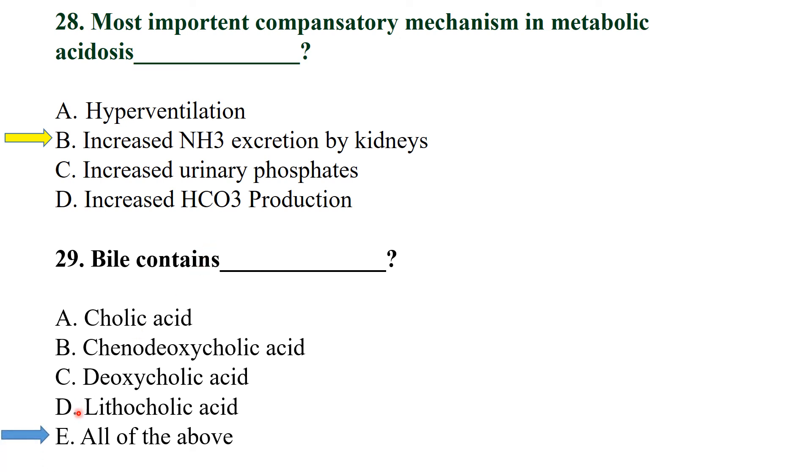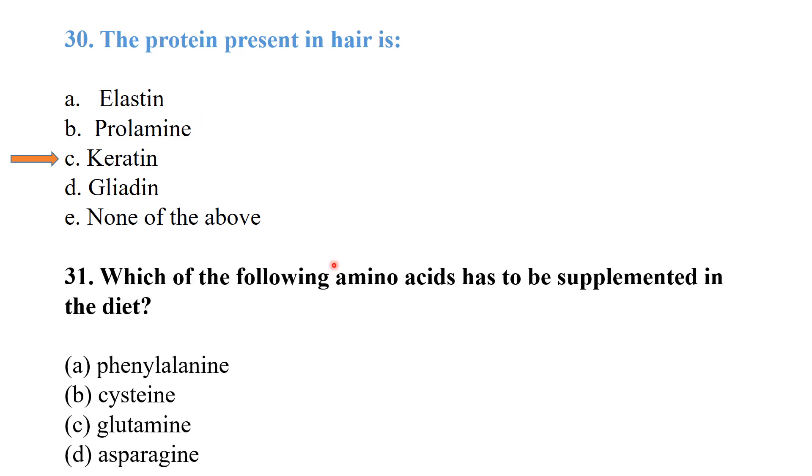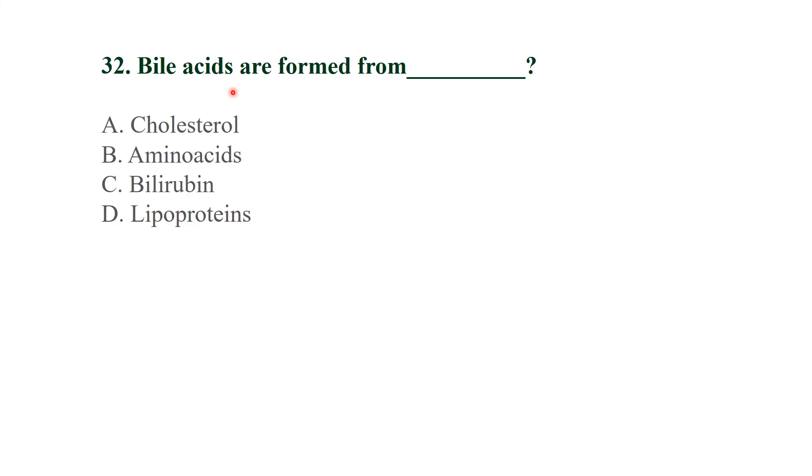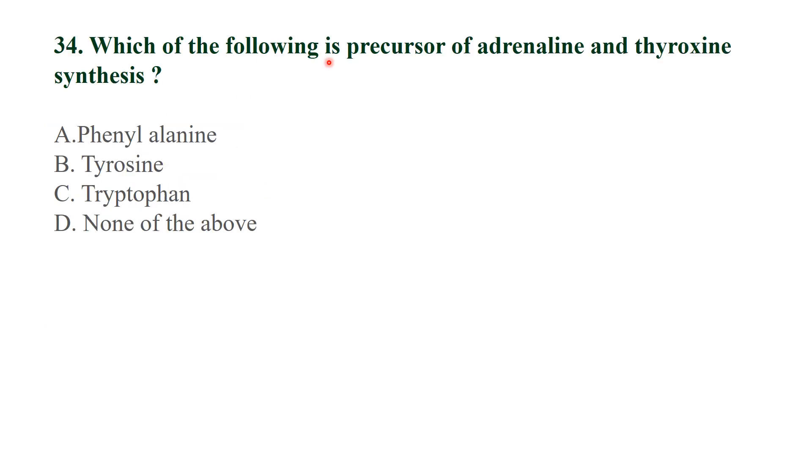The protein present in hair is keratin. Which of the following amino acid has to be supplemented in the diet? Phenylalanine. Bile acids are formed from cholesterol. Normal blood bilirubin level is 0.5 to 1 mg per deciliter. Which of the following is precursor of adrenaline and thyroxine synthesis? Tyrosine.